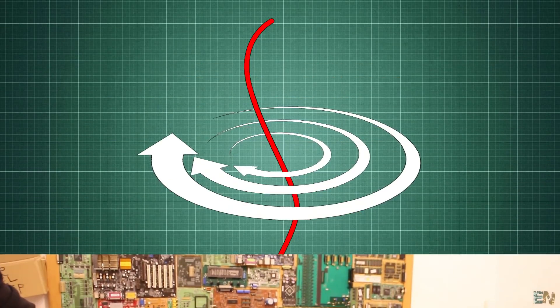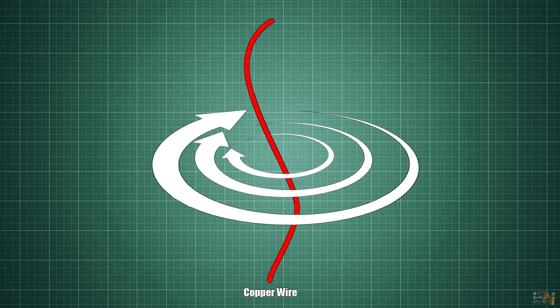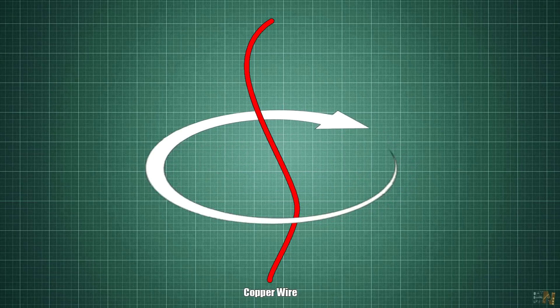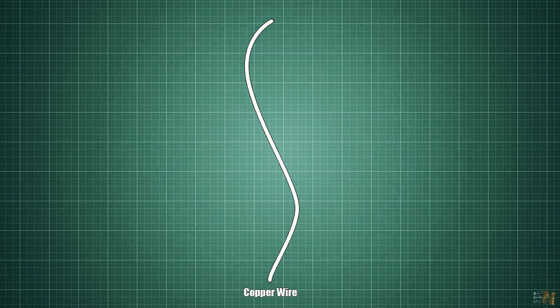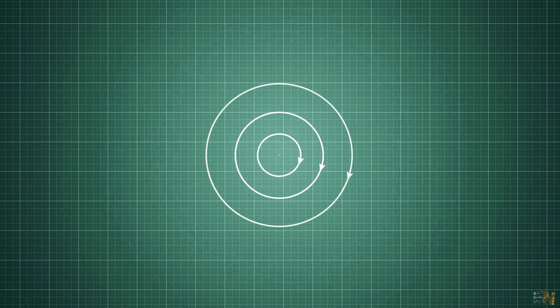Also, the closer we get to the wire, the stronger will be the magnetic field. The magnetic field is not the same as the magnetic flux, which is the variable that we will use with our transformers.